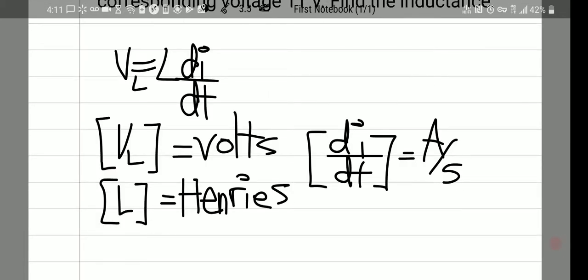To find inductance we use the voltage relation for inductors. V equals L di dt where the unit of voltage is volts. The units for inductance is Henrys and the units for di dt is amps per second.